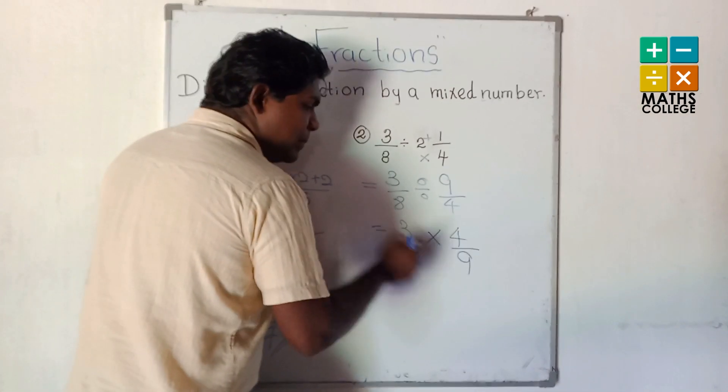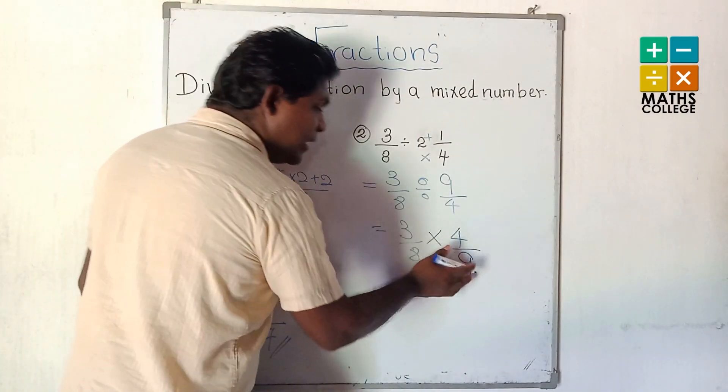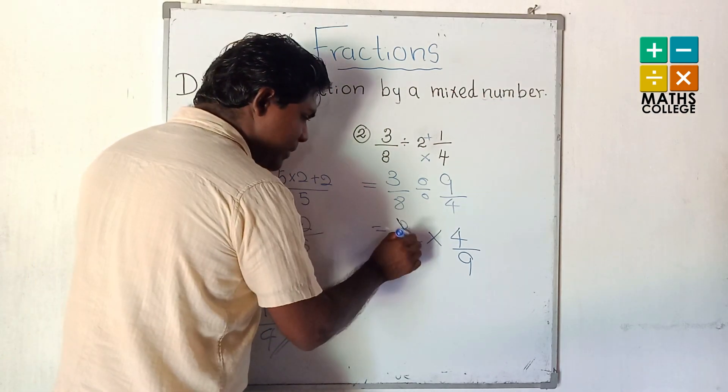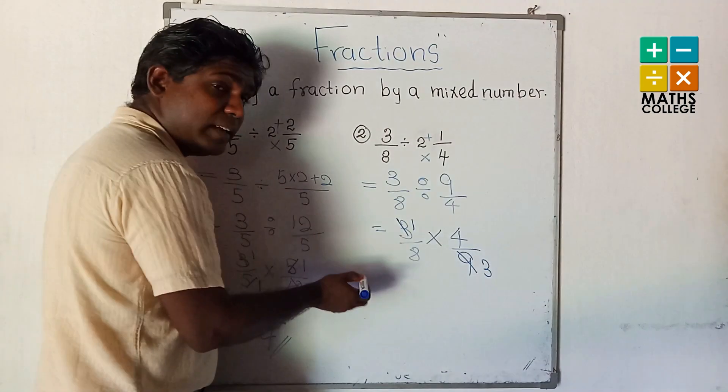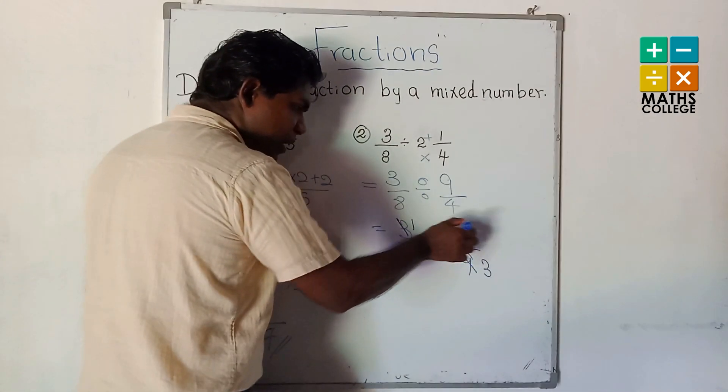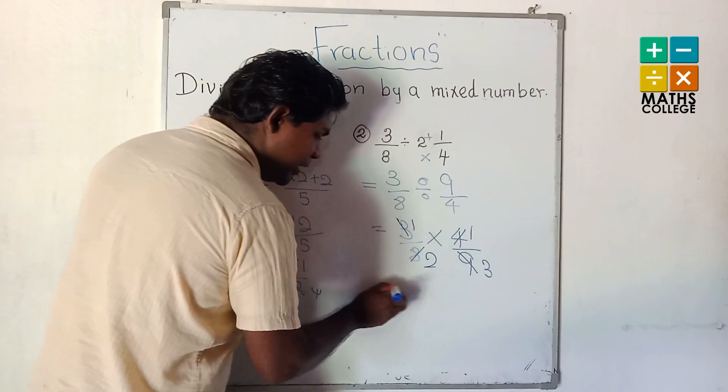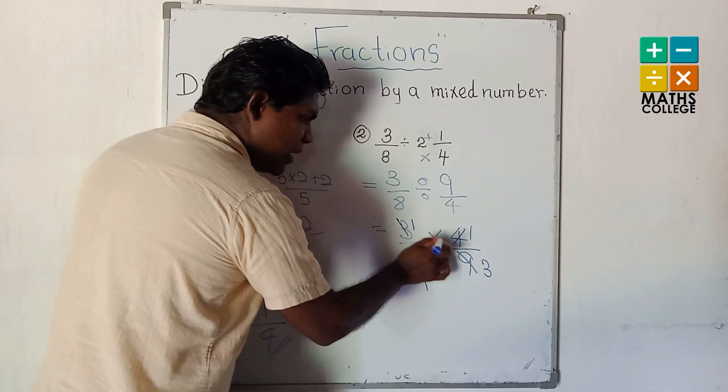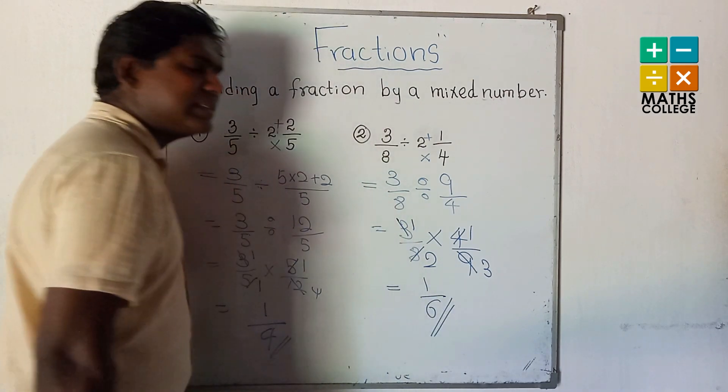Compare numerators and denominators. 3 and 9 have a common factor of 3. Cancel by 3: 1 and 3. Then 4 and 8 cancel by 4: 1 and 2. 1 multiply 1 is 1, 2 multiply 3 is 6. This is the answer: 1/6.